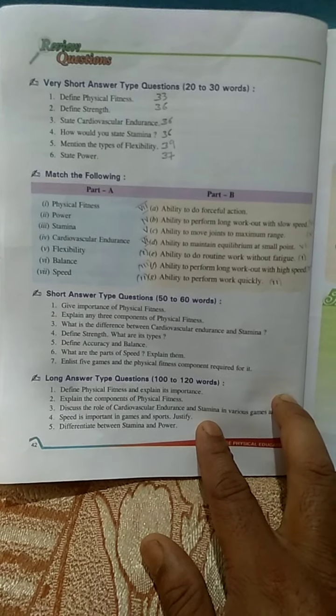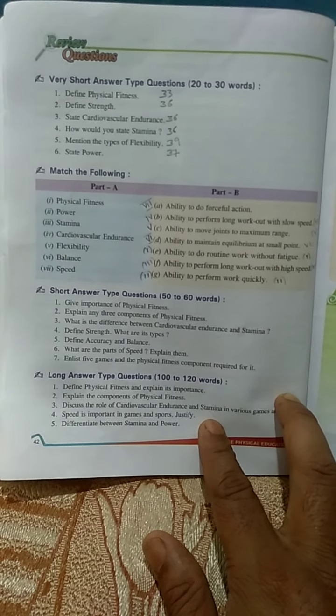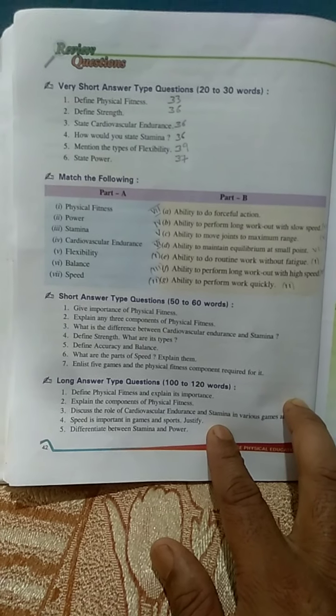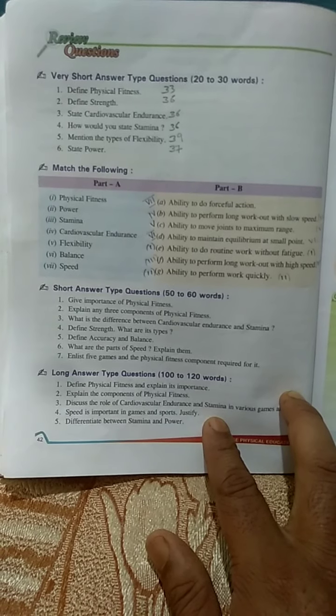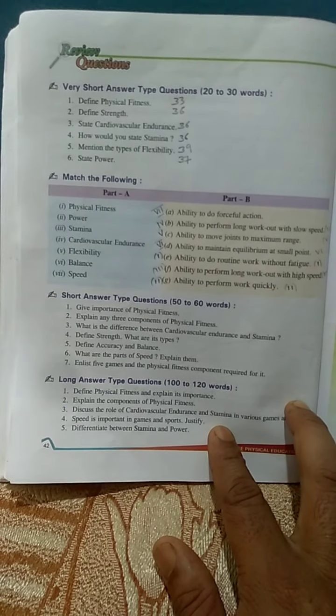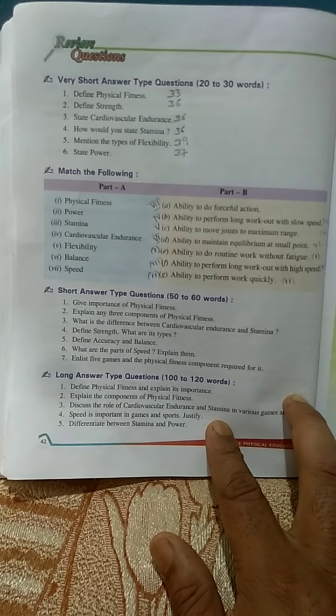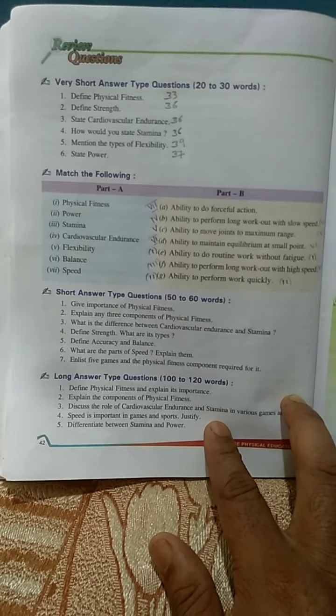Power - the answer is G, ability to perform work quickly. Third, stamina - F, ability to perform long workout with high speed. Fourth is cardiovascular endurance - B part.